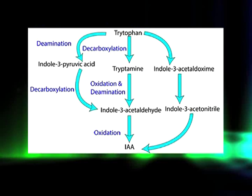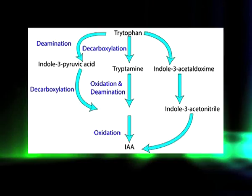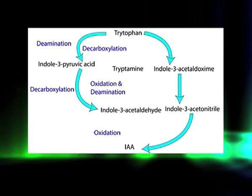In the IPA pathway, tryptophan is converted to indole-3-pyruvic acid through a deamination reaction. Indole-3-pyruvic acid is then converted to indole-3-acetaldehyde by decarboxylation. In the final step, indole-3-acetaldehyde is oxidized to IAA.